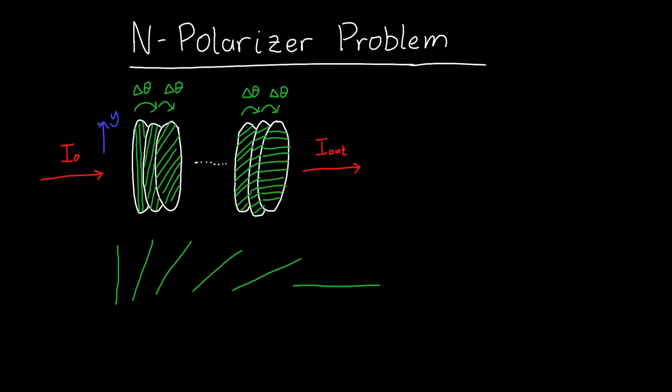Let's say that our input light is linearly polarized along the y-direction, and each polarizer, as we go to our first polarizer, second polarizer, third polarizer, is tilted by a little bit with respect to the previous one, and that tilt, that relative angle, we'll call Δθ.